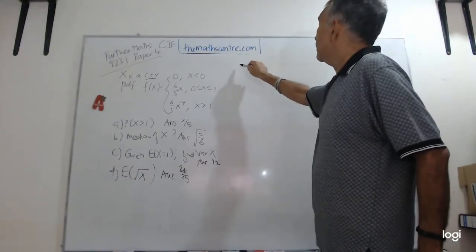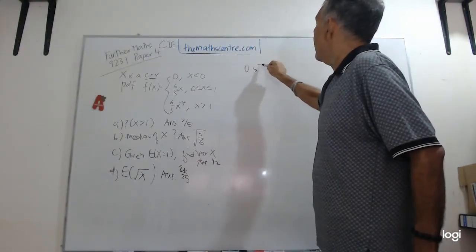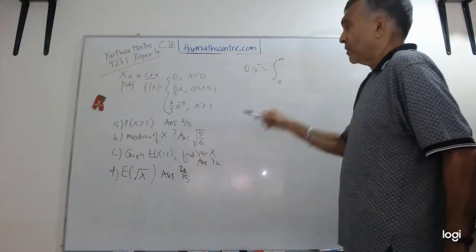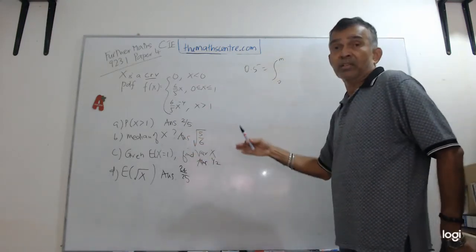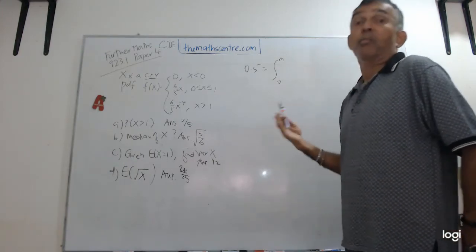So the median will be, 0.5 equals 0 to, let's call the median M. Remember, I didn't talk about the median, because that's kind of basic. Median means the probability x less than or equals to M is 0.5. Half the probability lies below M.